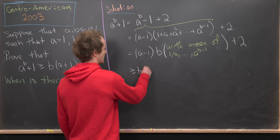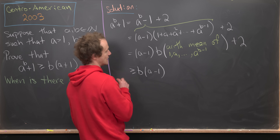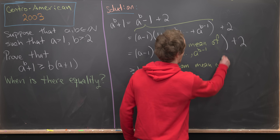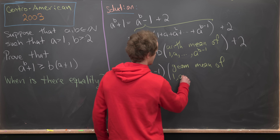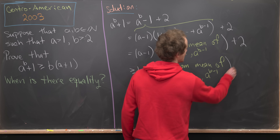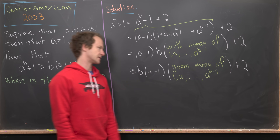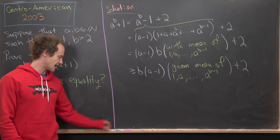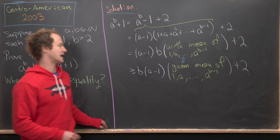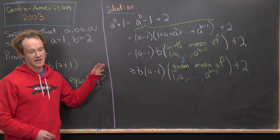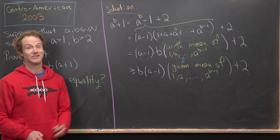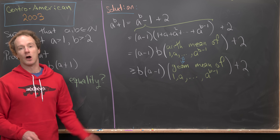We bring B out front and then we have A minus one times the geometric mean of the numbers 1, A, all the way up to A to the B minus one, plus two. From this step to the next we use the arithmetic-geometric mean inequality — the arithmetic mean is always bigger than or equal to the geometric mean.